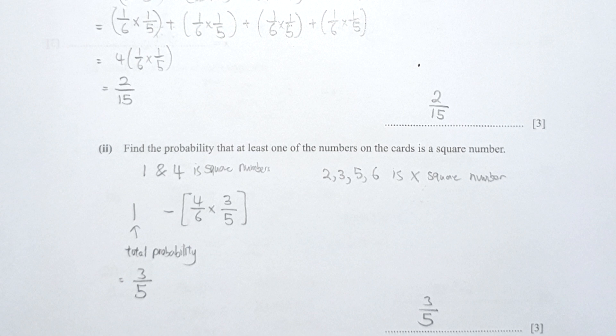For part 2, find the probability that at least one card is a square number. Only 1 and 4 are square numbers, the rest are not. Instead of listing all possibilities manually, I used the complement: 1 minus the probability that both cards are not square numbers. So 1 minus (4/6 × 3/5) gives the result as 3 over 5.